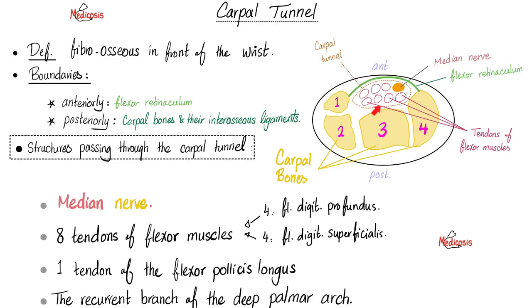What are the structures passing through the carpal tunnel — a very high yield exam question. The structures include the median nerve, which is the nerve that gets compressed to give the symptoms of carpal tunnel syndrome. Besides the median nerve, we have eight tendons of flexor muscles: four superficial and four deep — the four tendons of flexor digitorum superficialis, the four tendons of flexor digitorum profundus, and one tendon of flexor pollicis longus. Also, the recurrent branch of the deep palmar arch, an arterial network in the palm.